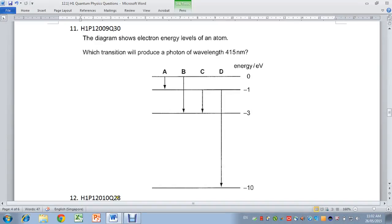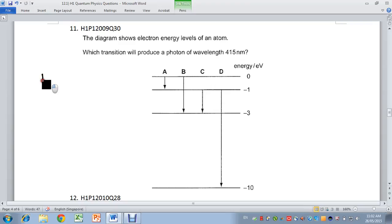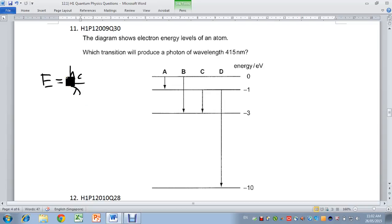Let's now look at question 11. The diagram shows electron energy levels of an atom. Which transition will produce a photon of wavelength 415 nanometers? We could just directly do this. The energy of a photon is related to the wavelength by this equation: E equals hc over lambda.